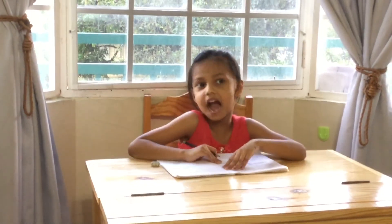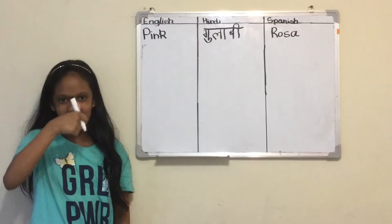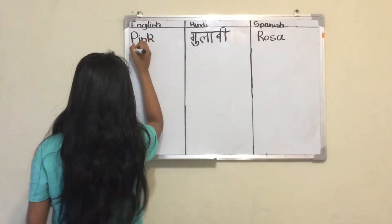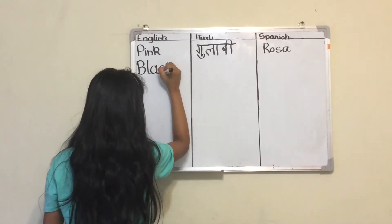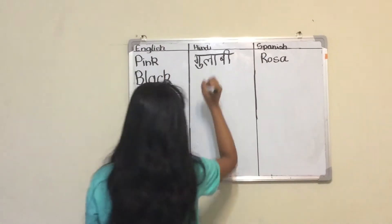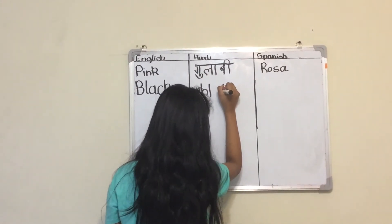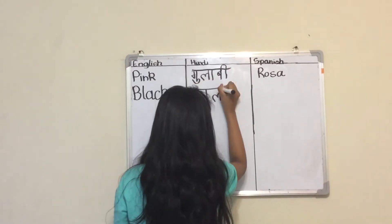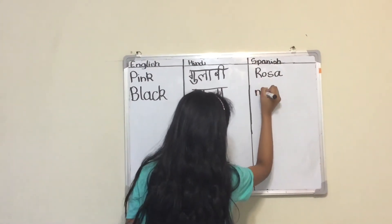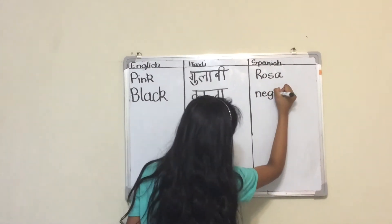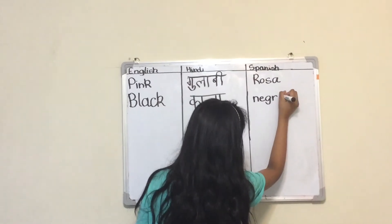Do you like the pink color? Yeah, it's my favorite color. Okay, now we will take a look at Black. Black in Hindi is Kala. Black in Spanish is Negro.